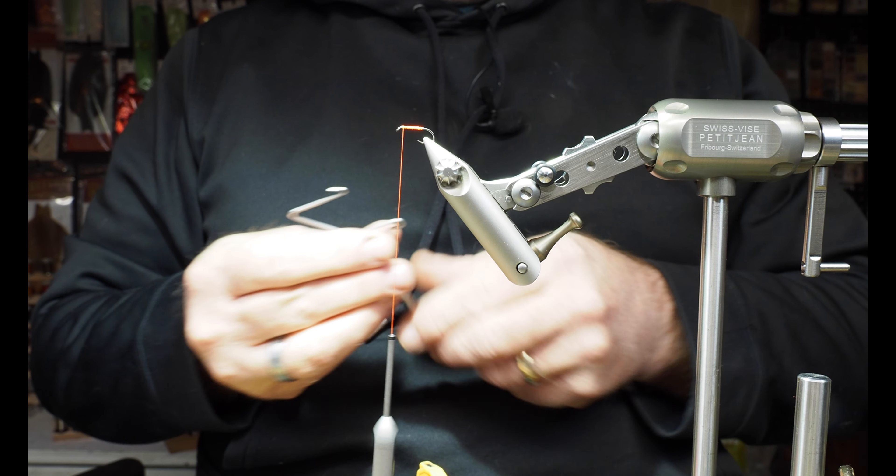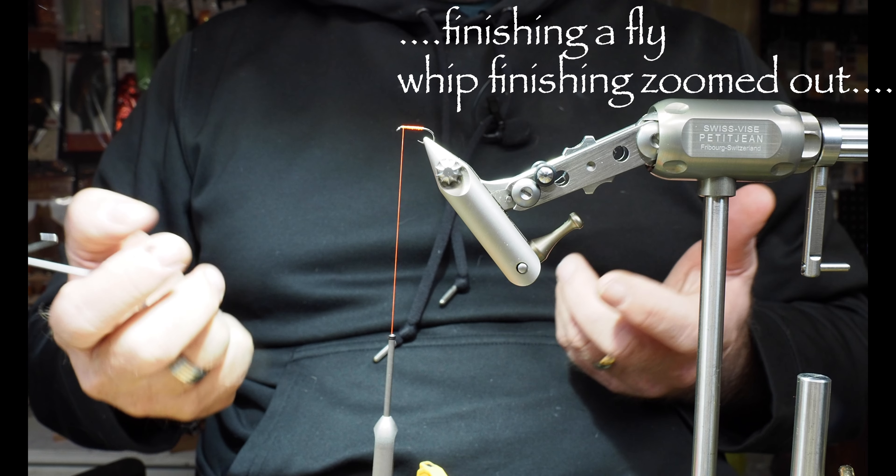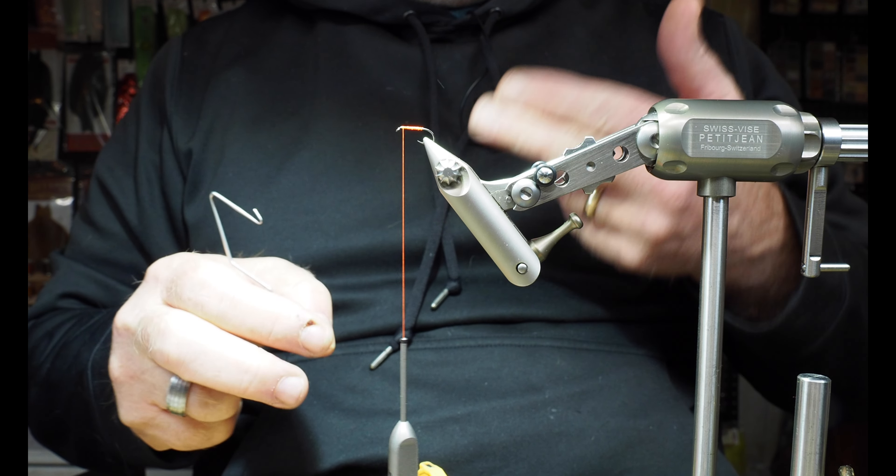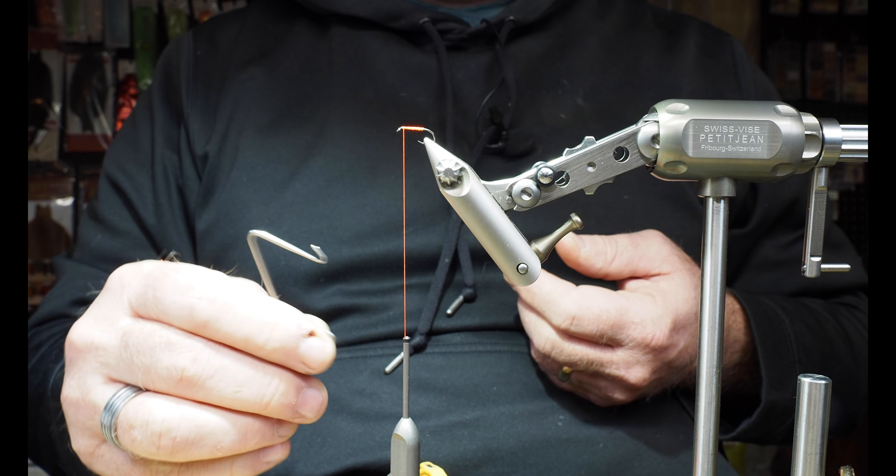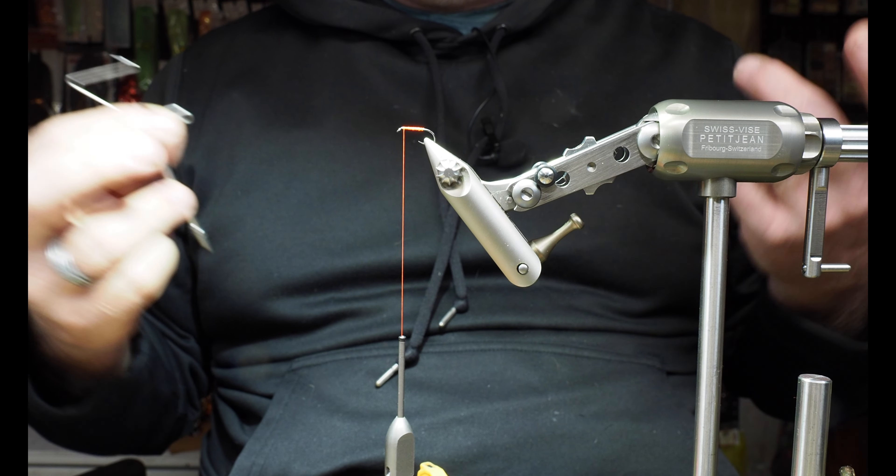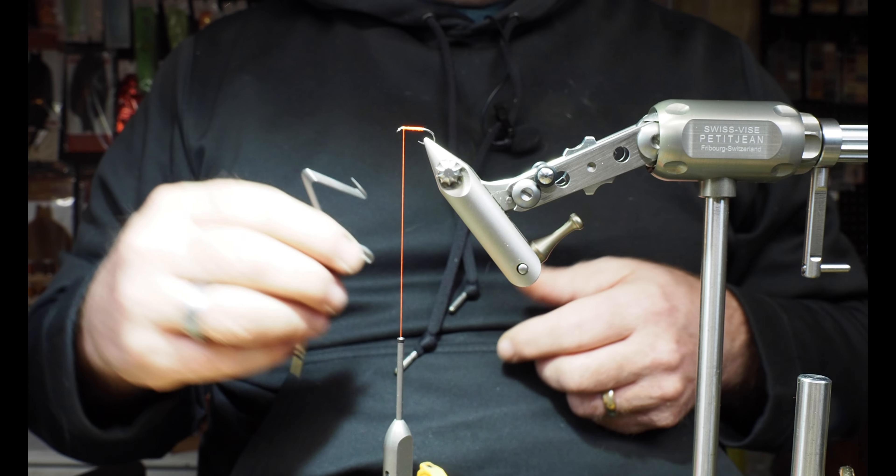So I wanted to do at least one more whip finish here, kind of demonstrating how you finish off your fly. If you're wanting to build up a little bit of a head and tie a knot at the same time, that's where the whip finisher comes in really handy. So I've positioned my thread up here near the eye of the hook, pretending that I've just finished tying a fly.